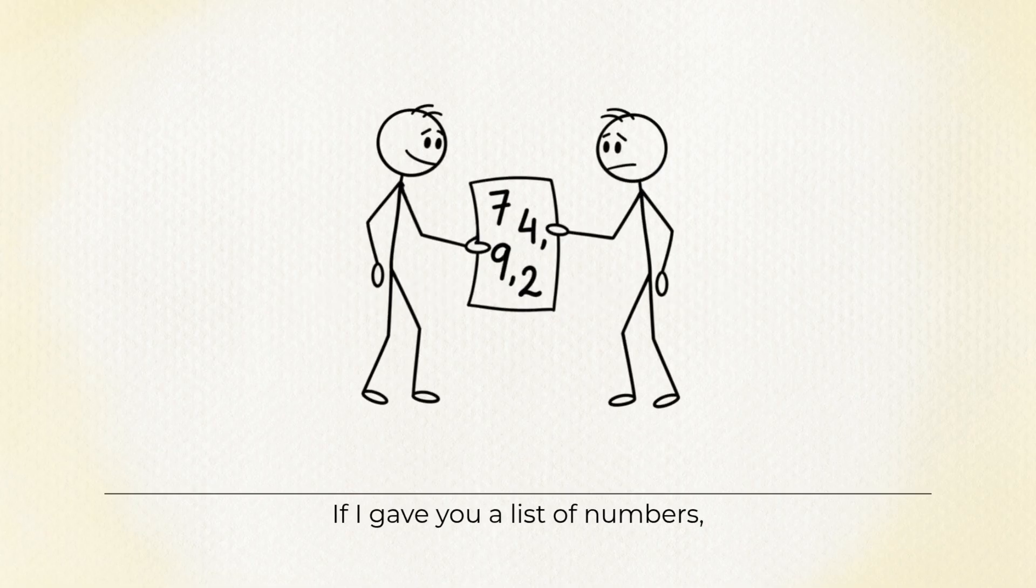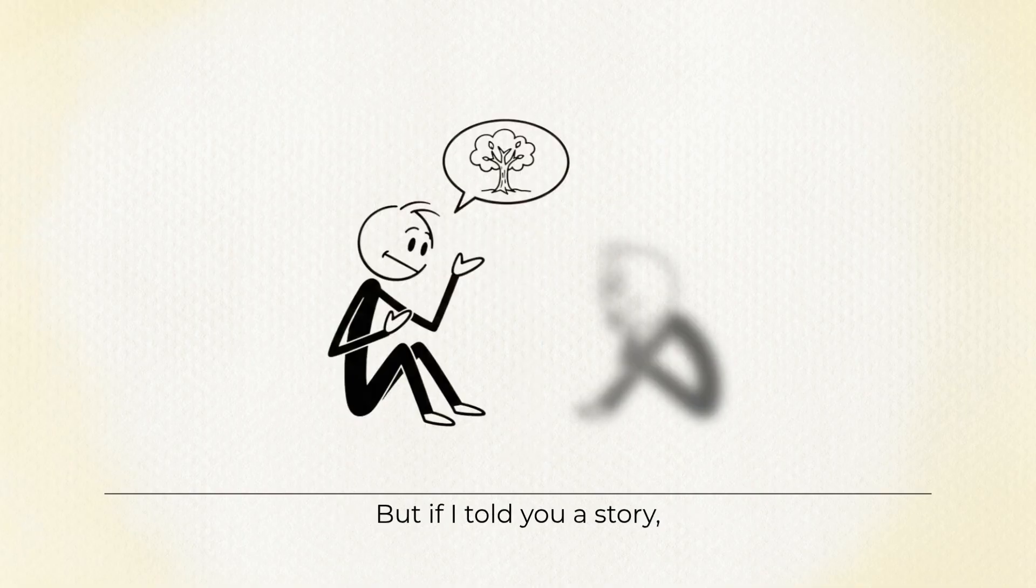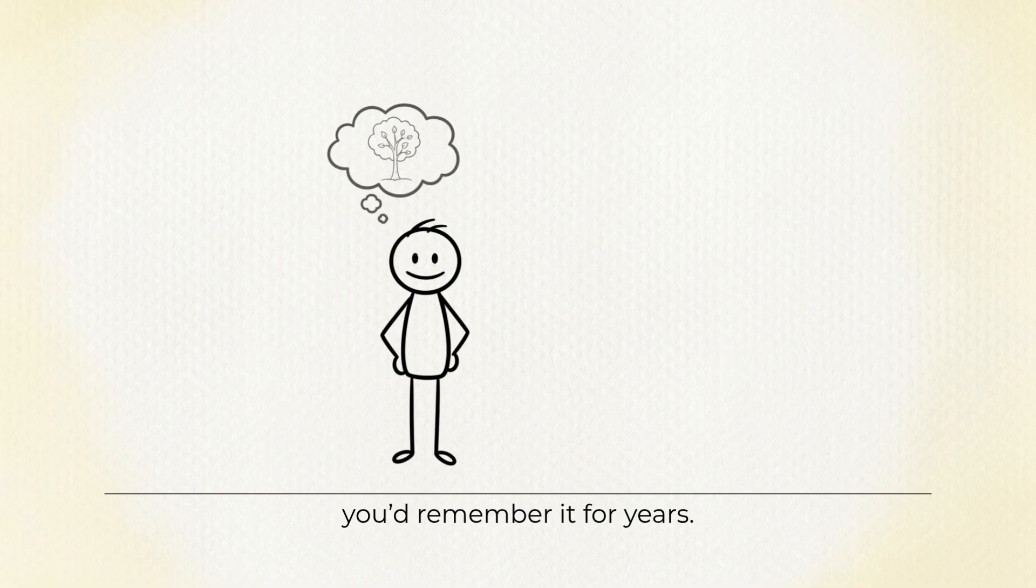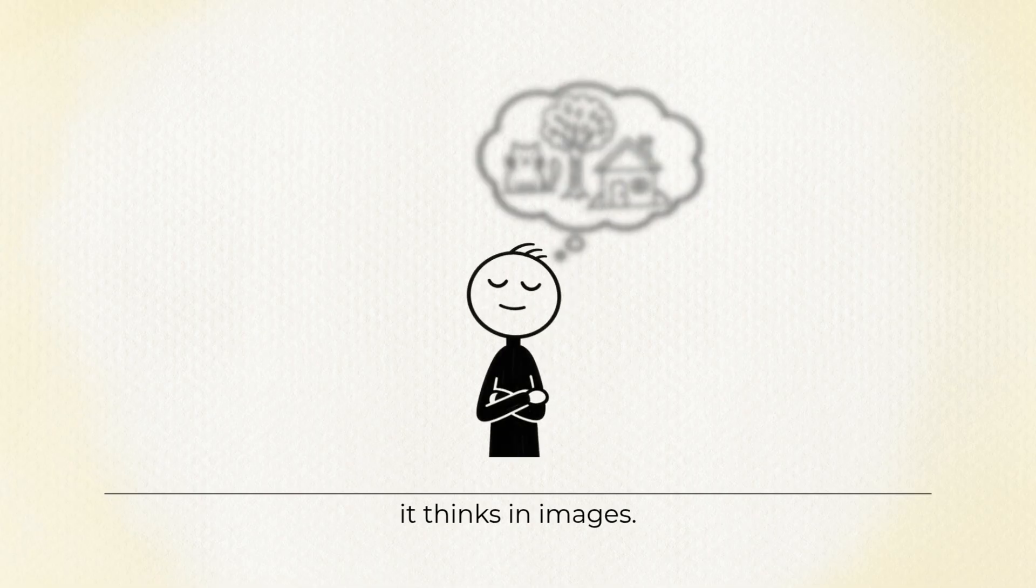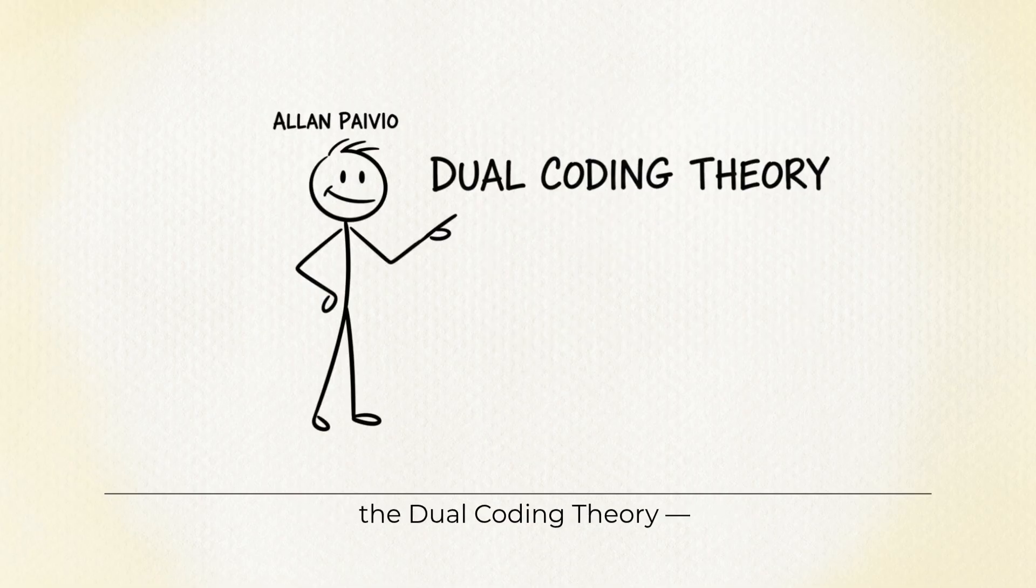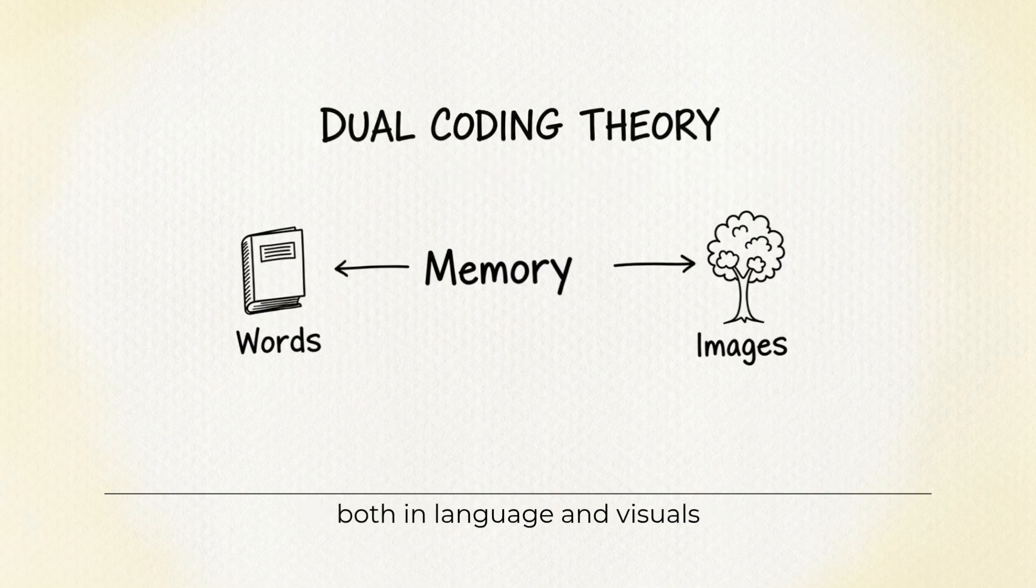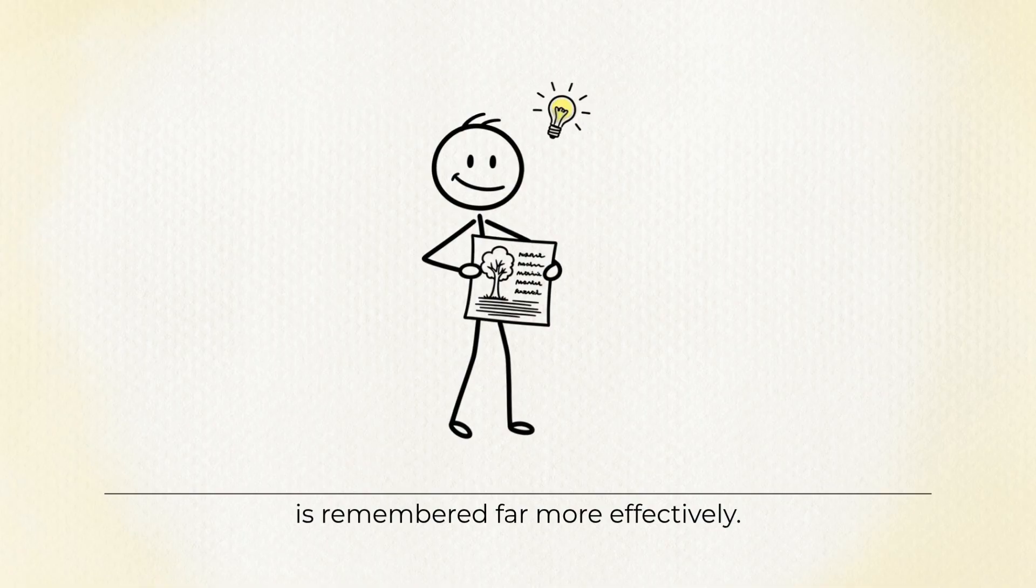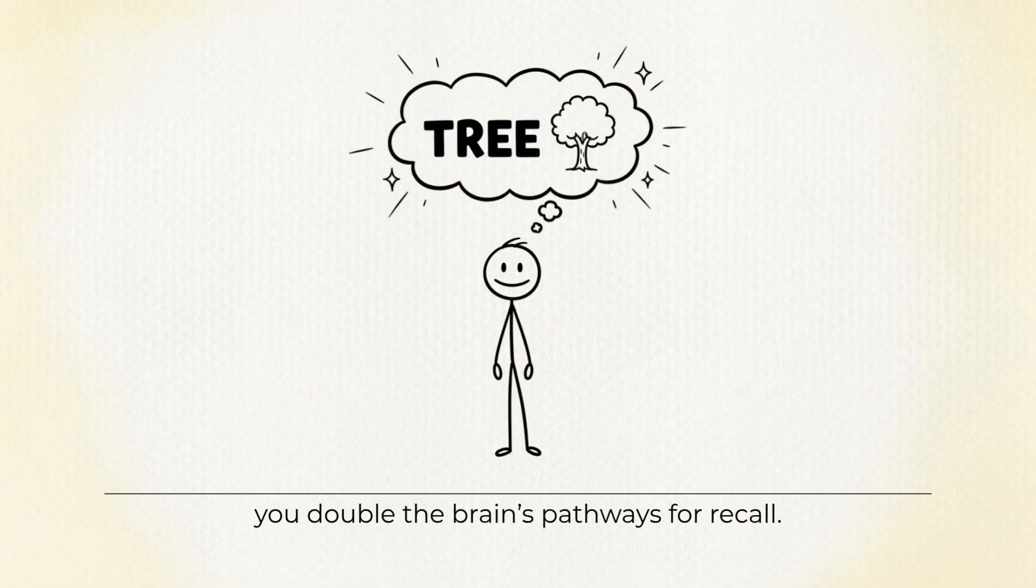See it to remember it. If I gave you a list of numbers, you'd forget them in minutes. But if I told you a story, you'd remember it for years. Because your brain doesn't think in words, it thinks in images. Psychologist Alan Pavio called this the dual coding theory. The idea that information encoded both in language and visuals is remembered far more effectively. When you combine words with images, you double the brain's pathways for recall.